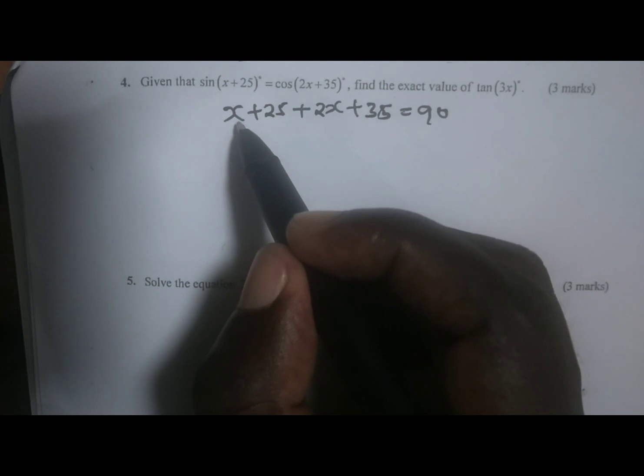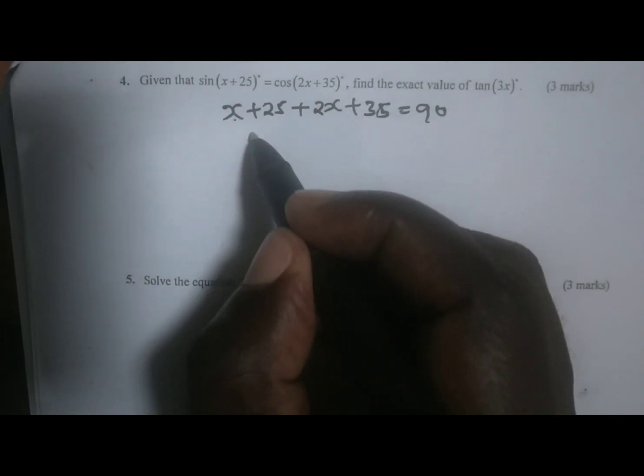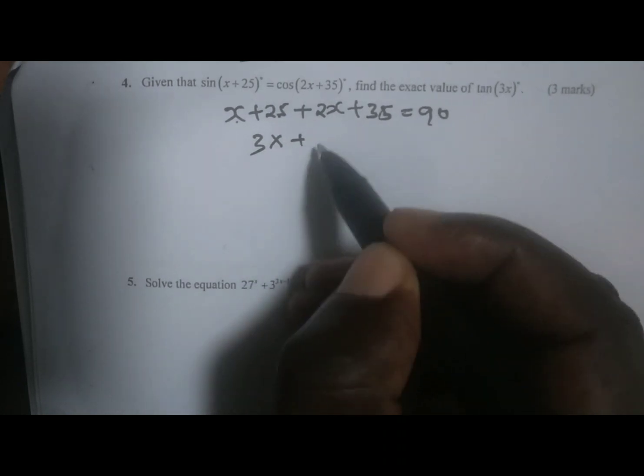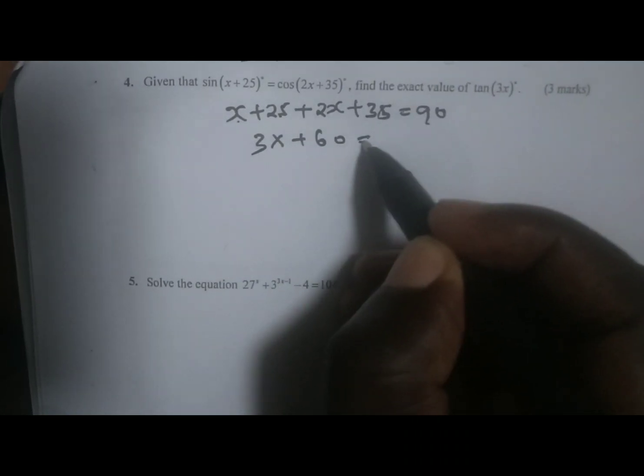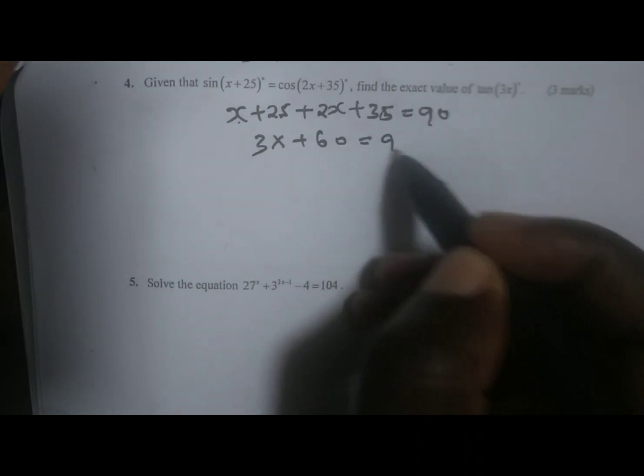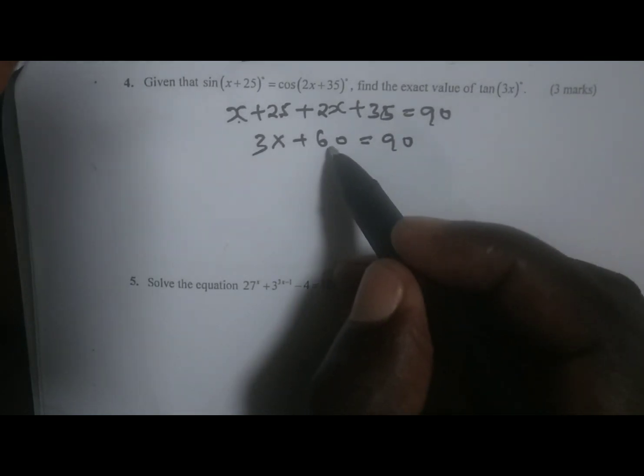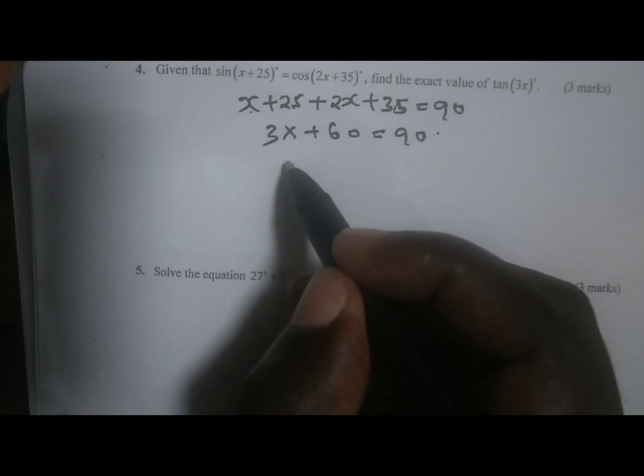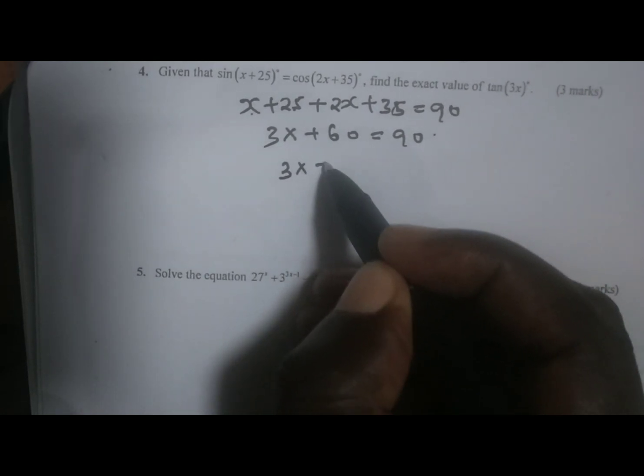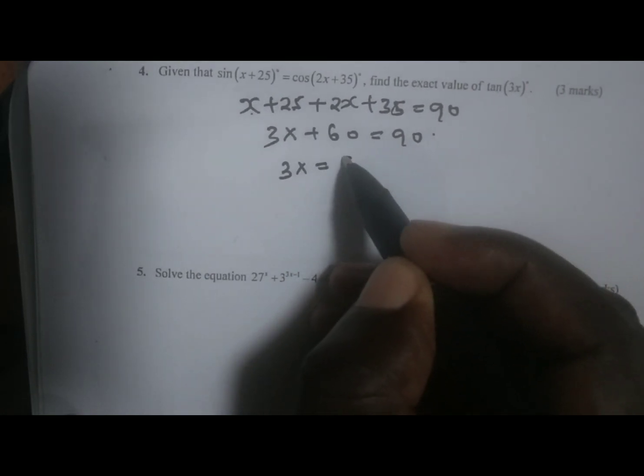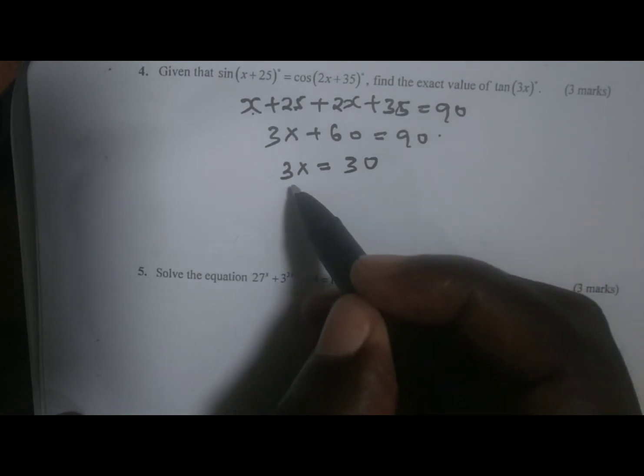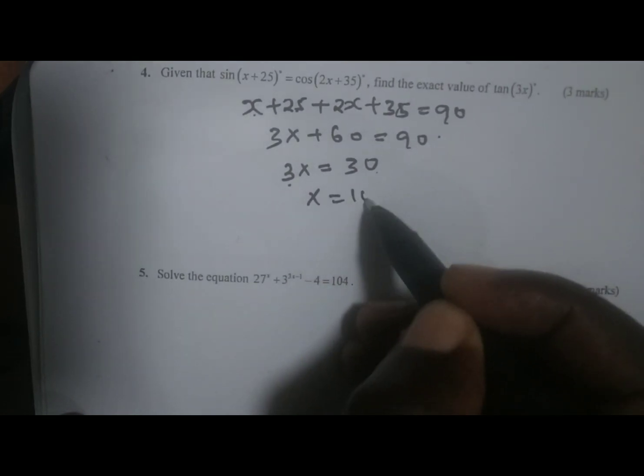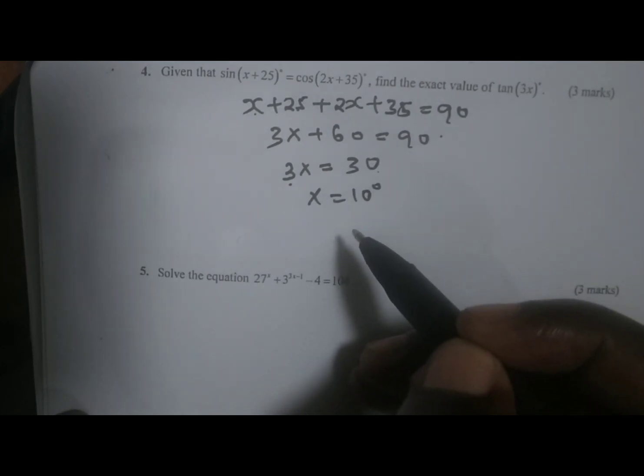Collecting the like terms, x plus 2x gives us 3x, 25 plus 35 gives us 60, and the two will give us 90 degrees. If we take 60 to the other side, we have 3x being equal to 30. You divide both sides by 3. Our x is going to be equal to 10 degrees.